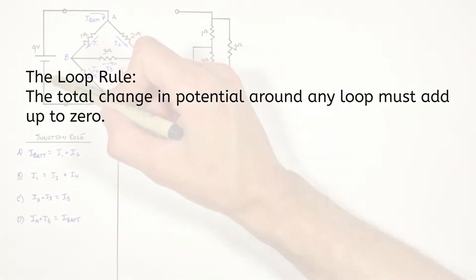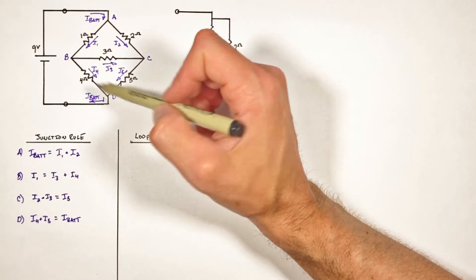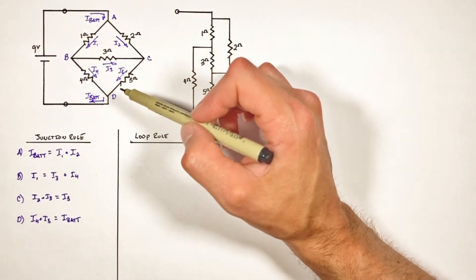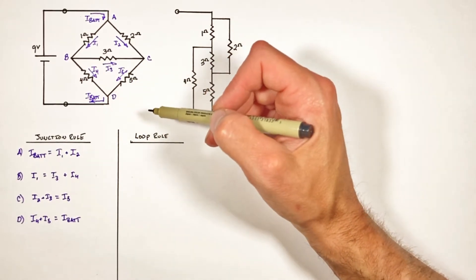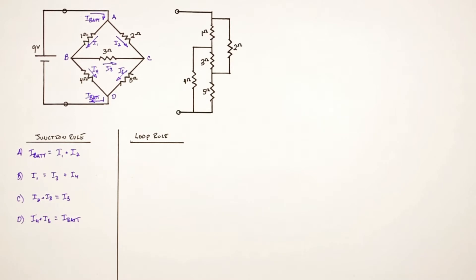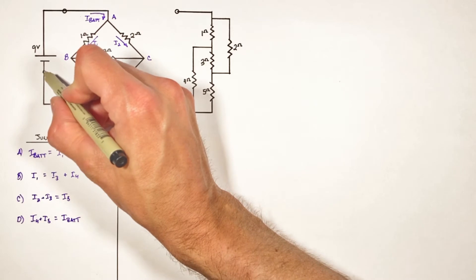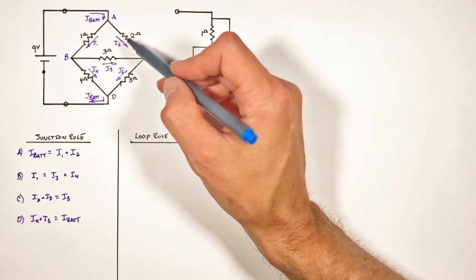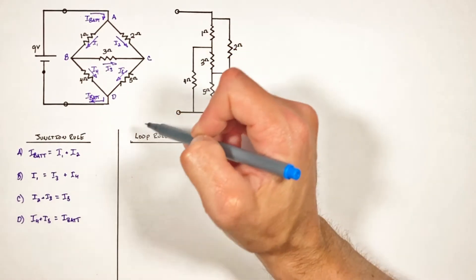The loop rule tells us that the total change in voltage around any loop in a circuit must add up to zero. In practice, if we start at some point in a loop and follow the path of the current, no matter what path we follow, the total change in voltage sums to zero. We're going to look at three different loops, and we want all five resistors to show up in at least one of those loops.